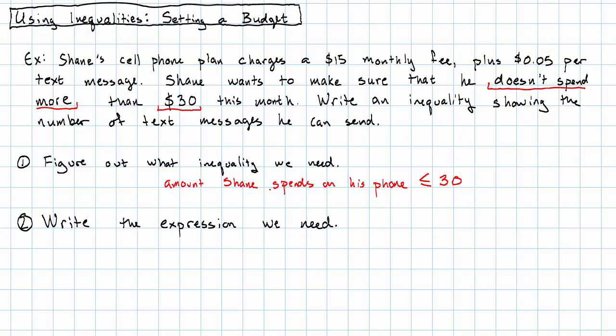So, the 30 was easy. We need to write an expression for the amount that Shane spends on his phone. So, his phone plan charges $15 monthly plus $0.05 per text message. And we're interested in the number of text messages. I'm going to say, T equals the number of text messages that Shane sends.